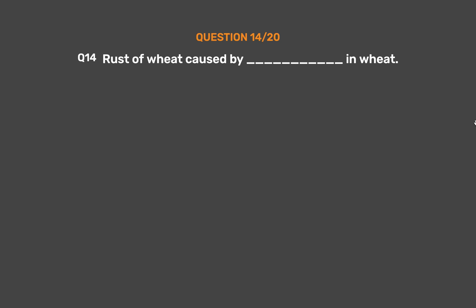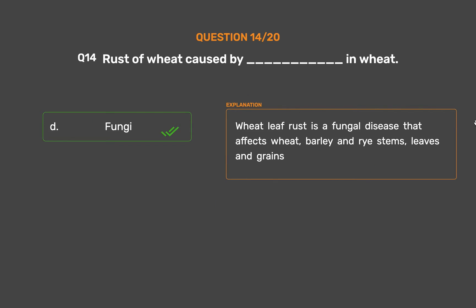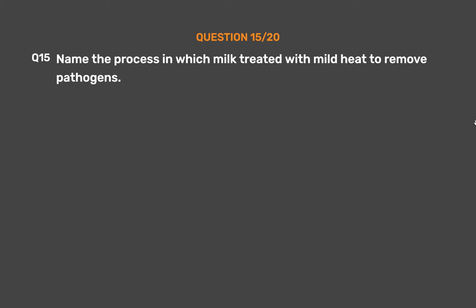Question number 14. Rust of wheat is caused by which microorganism? Option A: Algae. Option B: Protozoa. Option C: Bacteria. Option D: Fungi. The correct answer is Option D, Fungi. Wheat leaf rust is a fungal disease that affects wheat, barley, and rye stems, leaves, and grains.